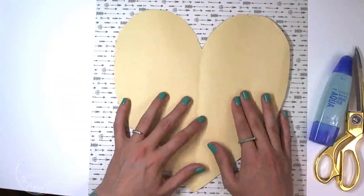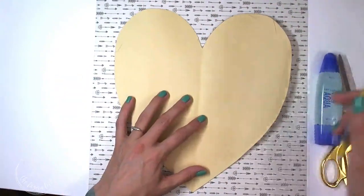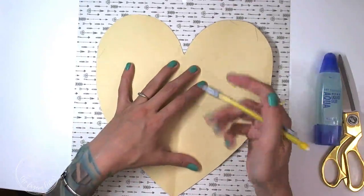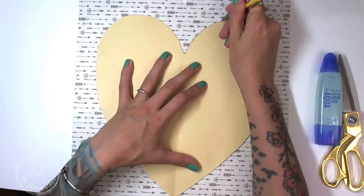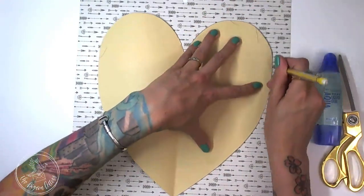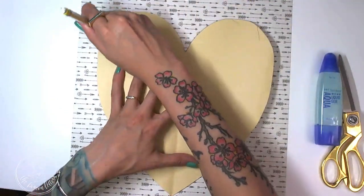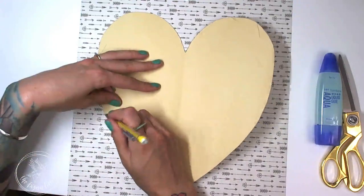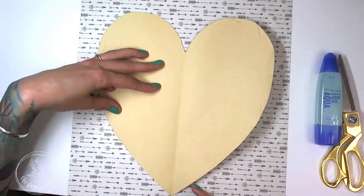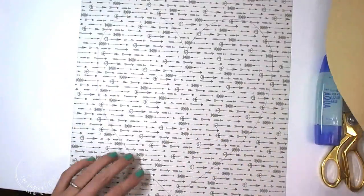So what we're gonna do is center that and then trace it. I have a pencil and I'm just going to do a quick trace around the edges here, and then I'm going to cut that shape out so it doesn't have the crease in the middle.